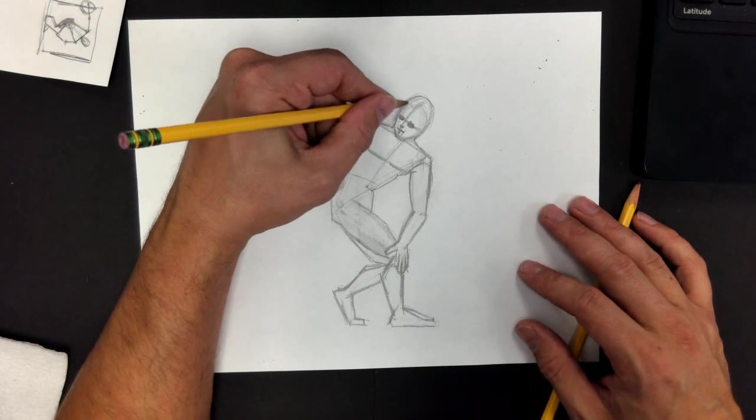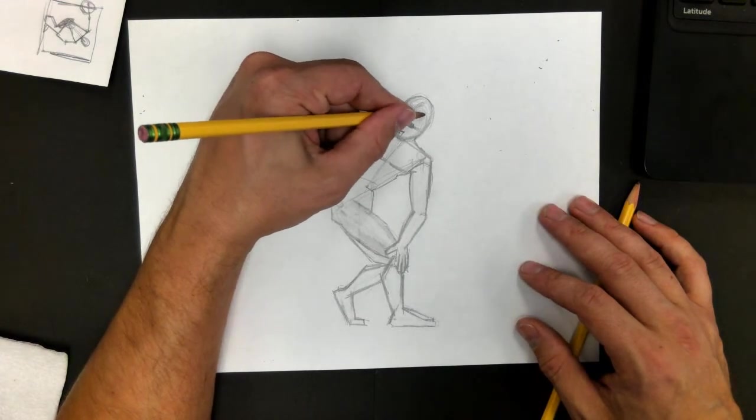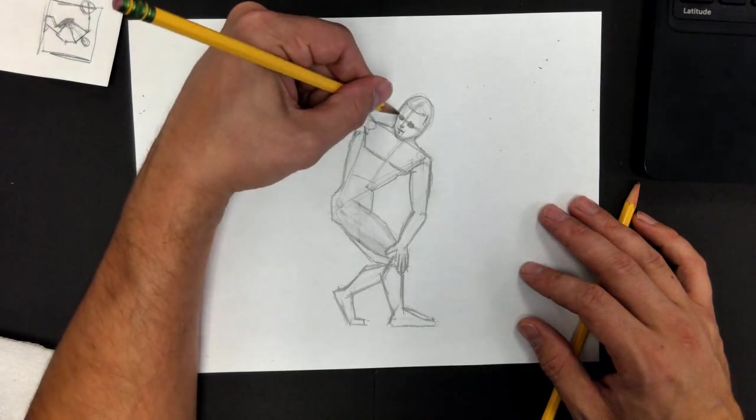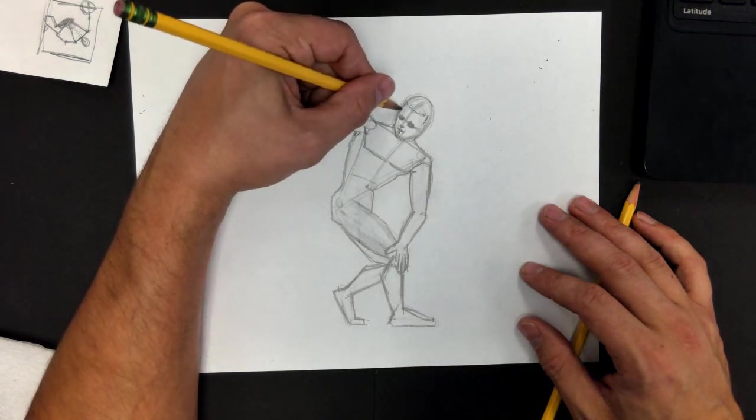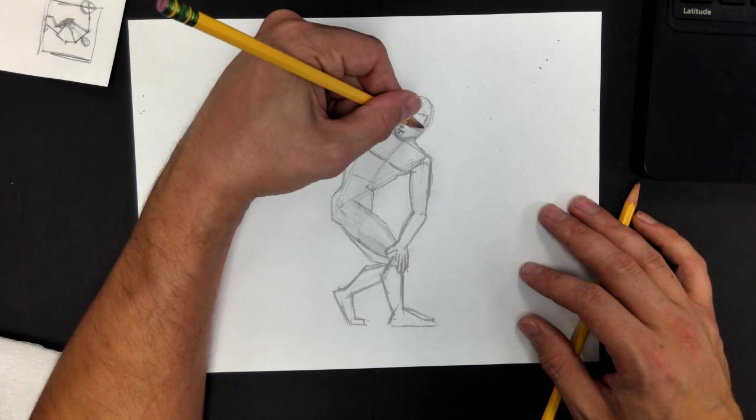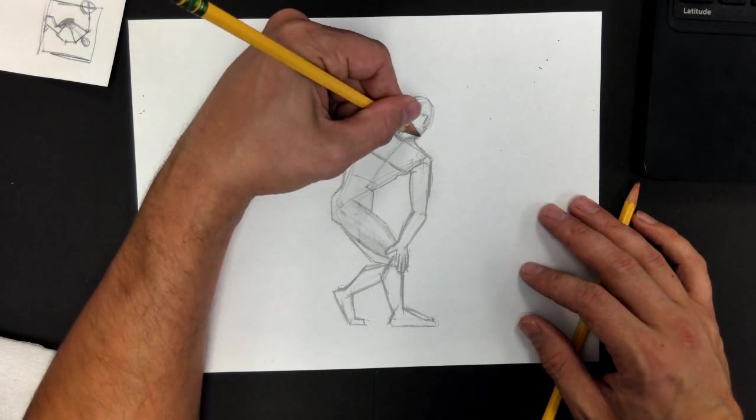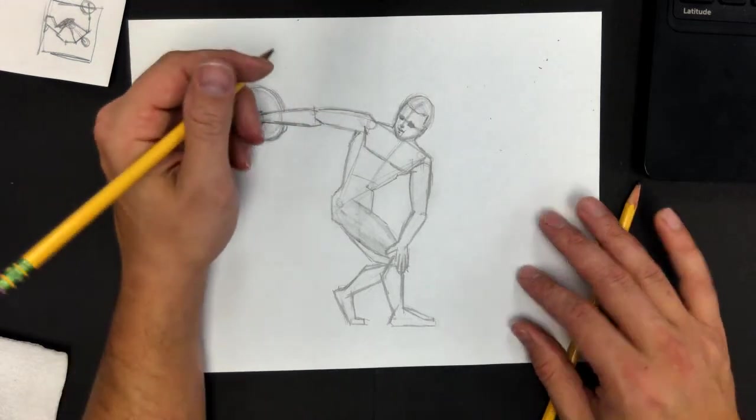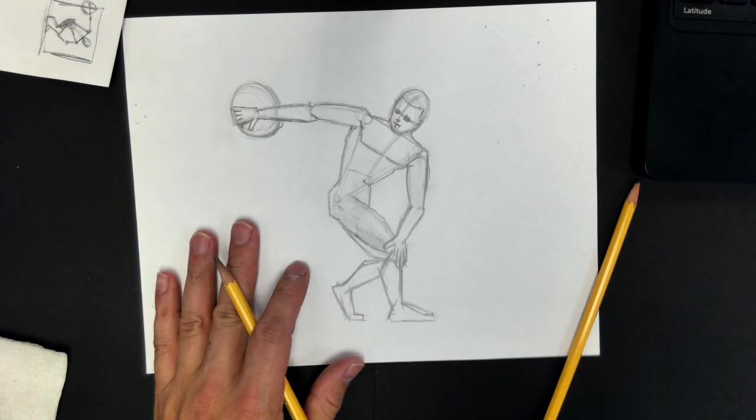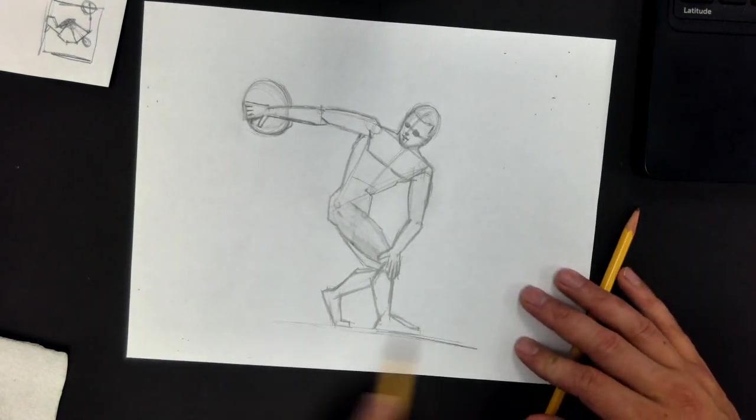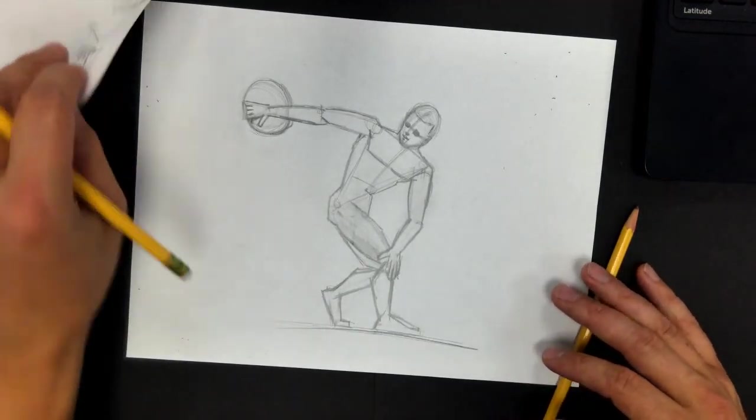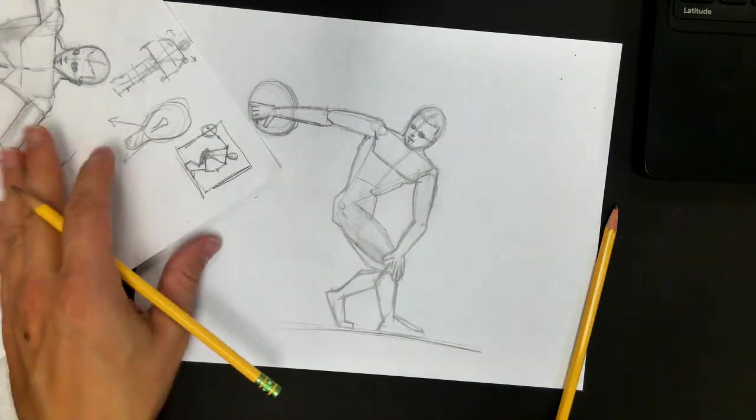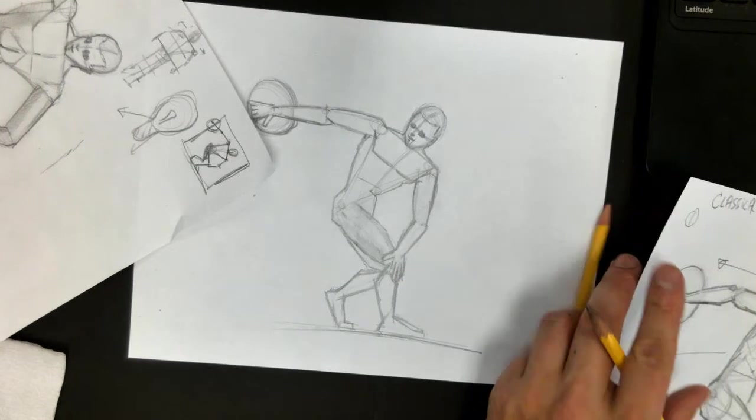So our culminating project, the reason why we're practicing this, I want to get the hair in here a little bit, is because we're going to be working on creating our own superhero inspired by Greek mythology. So I want us to get familiar with drawing the human body. So let's see, let's look at all these. I actually have quite a few of these. This is number, let's see. This is number one. I did this one first.